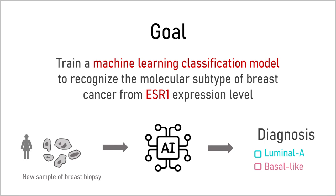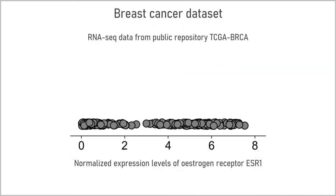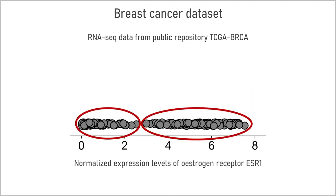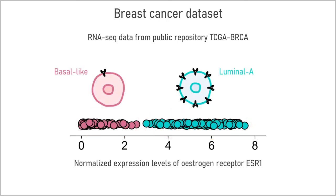Our goal will be to train a machine learning classification model to recognize the molecular subtype of breast cancer from the ESR1 expression level. For a new patient, the model will analyze the expression level of the gene ESR1 in the tumor and will provide the corresponding diagnosis in terms of molecular subtype. Let's look at real RNA-seq data of breast cancer from the TCGA public repository. Each point corresponds to a cancer sample. We can see that for some tumors the expression levels of ESR1 are low while for others it's high, and there is a gap in values forming two separate clusters corresponding to basal-like and luminal A molecular subtypes.